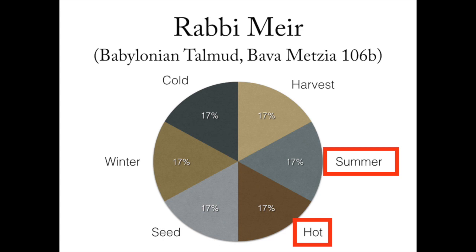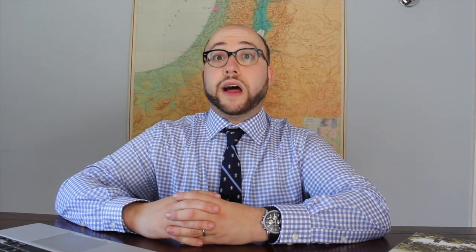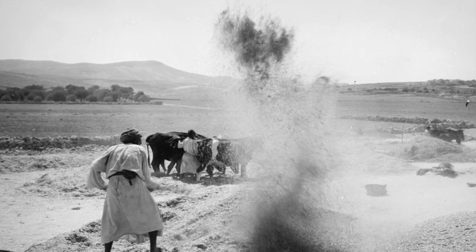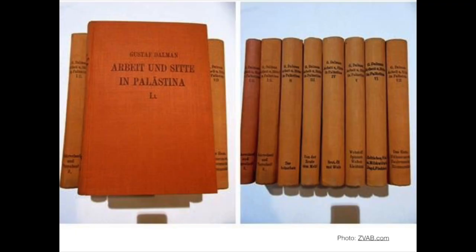Now, Rabbi Meir's interpretation is very interesting, and it's based on a hyper-literal reading of this verse. However, based on our understanding of biblical parallelism throughout the Bible, I think there's really another explanation that makes a lot more sense. This brings us to a second interpretation, that of Gustav Dahmen. Gustav Dahmen was a German who lived between 1855 and 1941. Between the years of 1899 and 1914, he lived in the land of Israel, which was called Palestine at that time, and he lived amongst the Palestinian farmers and Bedouin. What he did was observe how they lived life, how they calculated seasons, how they celebrated festivals, and so on. His observations were written after the war in an eight-volume magnum opus called Arbeit und Züte in Palestina, Work and Customs in Palestine. The eighth volume was written after his death.